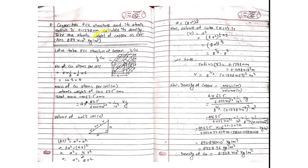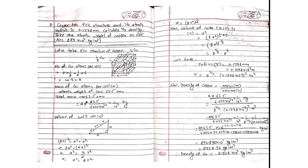To solve this, we first need to count how many copper atoms are in the structure, then find the total mass of the structure in kg, and we need to find out the volume of this structure. After finding the volume and mass, we apply the formula: density of copper equals mass upon volume.